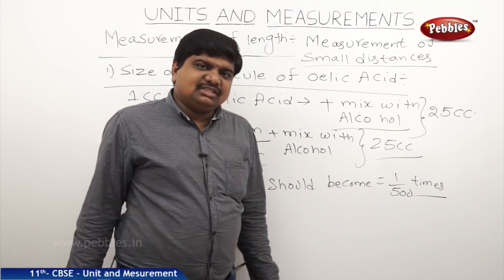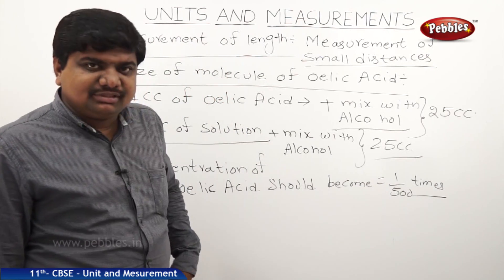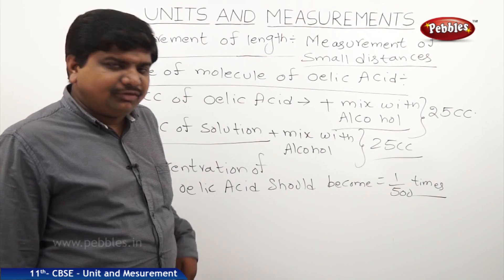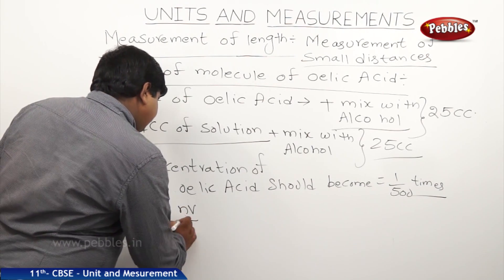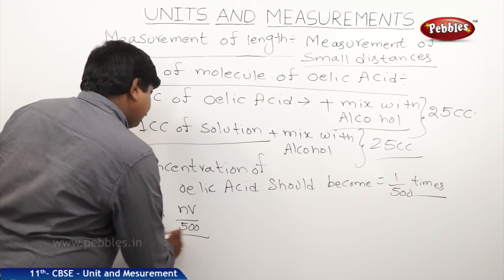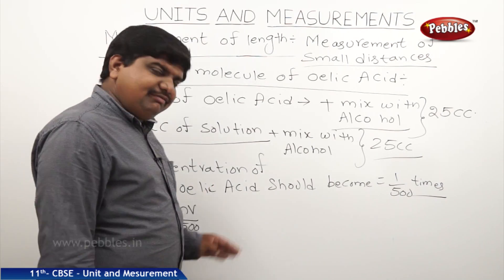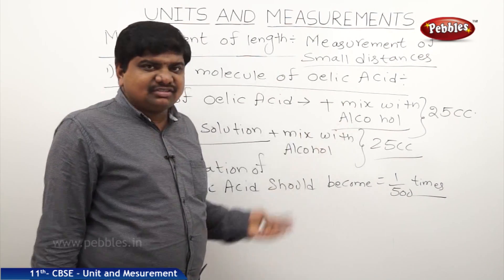Let us suppose its volume also decreased by 500 times. It contains some n number of drops, therefore it will be nv by 500. Now we should equate this nv by 500 with the other dimensions of the oleic acid molecule, then we will get the size of each molecule.